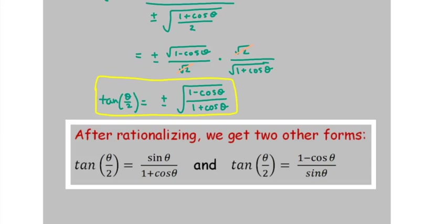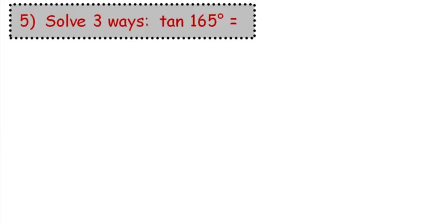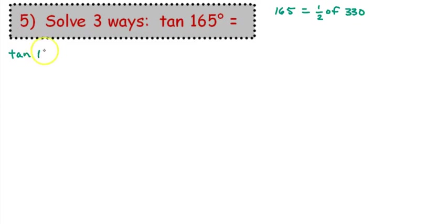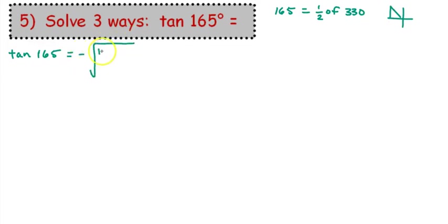Once you get all three of those copied down, we can go ahead and do our examples. We're going to use all three identities and solve tangent of 165 degrees. 165 is half of 330. So the tangent of 165 — let's figure out if we need plus or minus. 165 is in quadrant 2 and tangent is negative in quadrant 2, so we need a minus square root of 1 minus cosine 330 over 1 plus cosine 330.